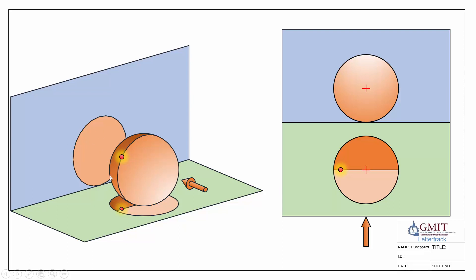The extreme generator marks the outline of the shape projected for our front elevation. Because our point is on the extreme generator in plan view, as we look in from the front we project that point straight back and it ends up on the outline or the outer edge of our front elevation.